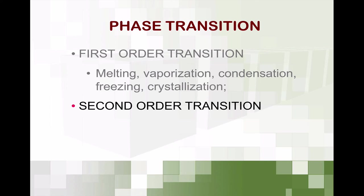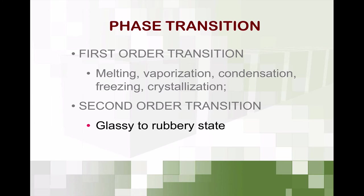Whereas for an amorphous material like spaghetti, the state transition can be described as a second order transition. In this case, there is no change in phase, but there is a change of state from a glassy into a rubbery state — from the glassy spaghetti state into a soft rubbery state. The transition of thermodynamic properties does not change at a very sharp point; there is always a range of temperatures where the transition occurs. This is what we call second order transition.